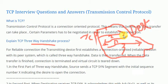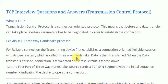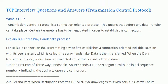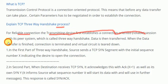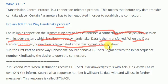For a reliable connection, the transmitting device first establishes a connection-oriented reliable session with its peer system — this is called the three-way handshake. Data is then transferred, and when the data transfer is finished, the connection is terminated and the virtual circuit is cleared.